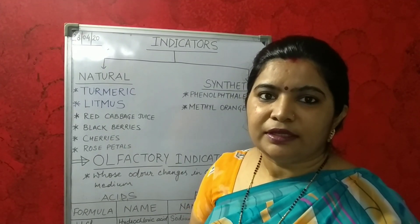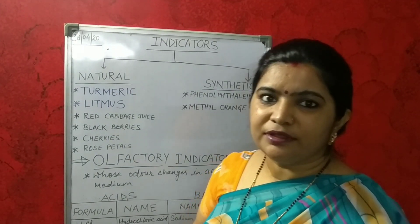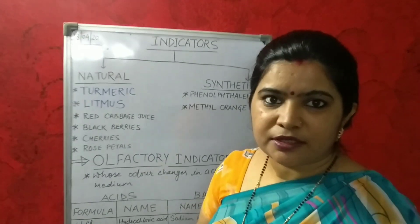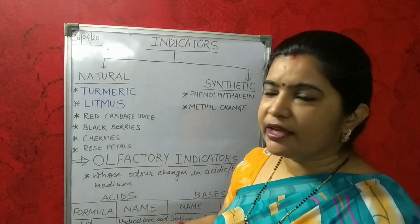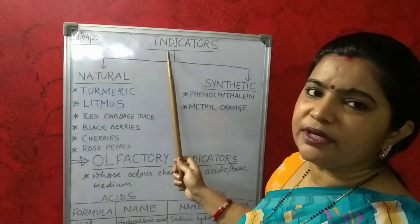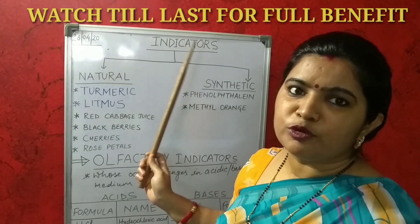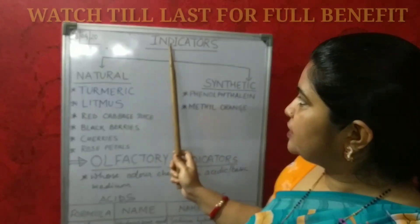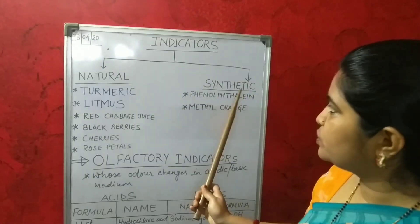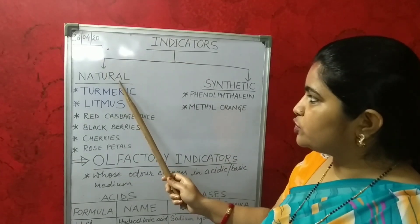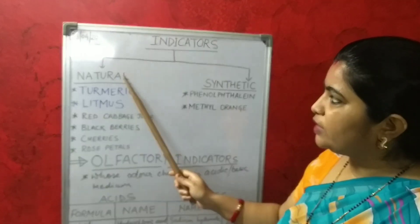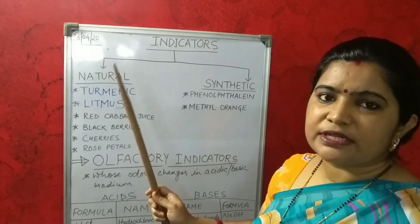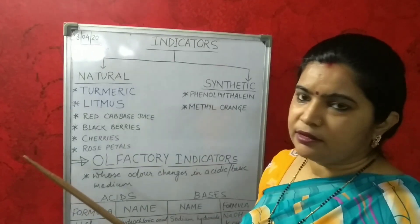Welcome you all in my class Chemistry Gurkul. In my previous video you have already understood the introductory part of this chapter and I have initiated this topic — indicators. We will move forward and understand that indicators are further divided into two types: one is natural, another one is synthetic. We have two types of indicators to find out whether a substance is acidic or basic.